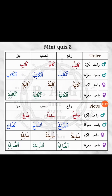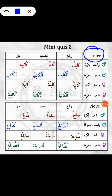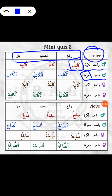Our first word is 'writer,' and the Arabic translation is kathibun. You can make a table with columns for rafa, nasab, and jar — vahid masculine nakra, then vahid masculine marfa. For the marfa forms, you'll make the alif-lam forms by prefixing kathibun with alif-lam, and then proceed with the rafa, nasab, and jar forms.